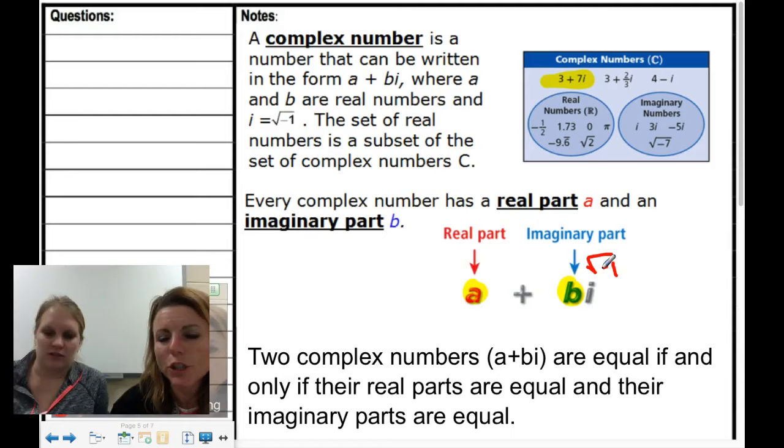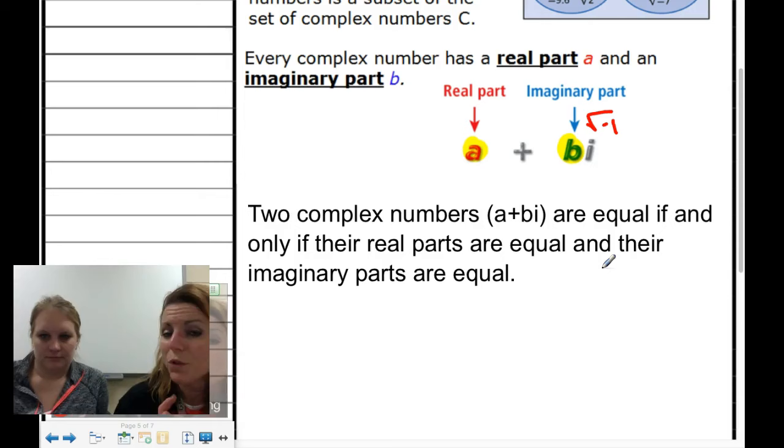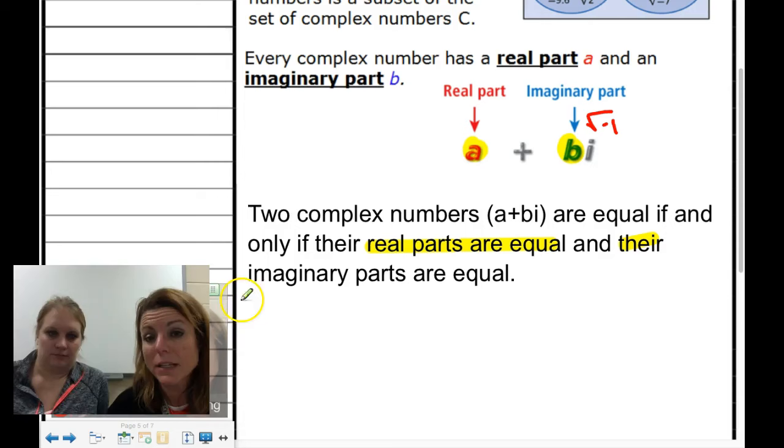Two complex numbers, A plus Bi, are equal if and only if their real parts are equal and their imaginary parts are equal. That is important. We're going to use that in the next part of the lesson. A is the real part and B is the imaginary part.